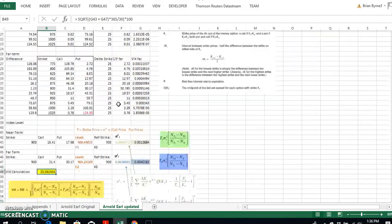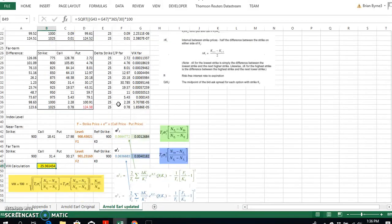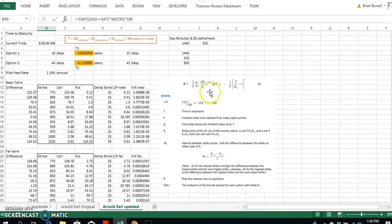So we've worked out T1, we've worked out T2, we've figured out the relevant exercise, we've figured out if you like the K0, we figured out F1, F2. Now we've got to estimate this term here.